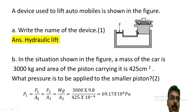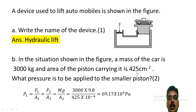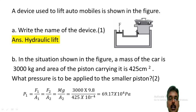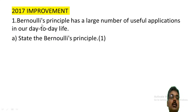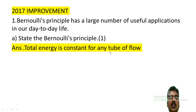P1 equals F1 divided by A1, and F2 divided by A2. F2 equals M into G. M is 3000 kg, g is 9.8. A2 is 25 cm squared. Converting cm squared to meter squared: 1 cm = 10 raised to minus 2, so 1 cm squared = 10 raised to minus 4 m squared. The calculated pressure is approximately 6.917 into 10 raised to 4 Pascals. Pressure unit is Newton per meter squared.